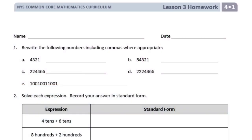Grade 4 Module 1 Lesson 3 Homework, number 1: rewrite the following numbers including commas where appropriate. To put commas, we always start in the ones place and count back — every three numbers we put a comma. This helps us group the numbers so that they are easier to look at and read when we get to reading and writing numbers in written form.